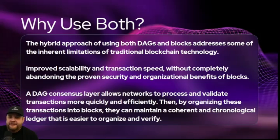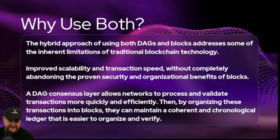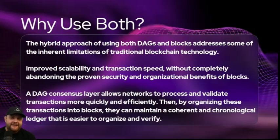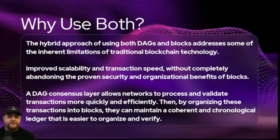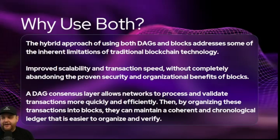Why would X1 use both DAGs and blocks? The hybrid approach addresses some of the inherent limitations of traditional blockchain technologies like Bitcoin and Ethereum using Nakamoto consensus. This DAG hybrid consensus mechanism offers improved scalability and transaction speed without completely abandoning the proven security and organizational benefits of blocks. A DAG consensus layer allows the network to process and validate transactions more quickly, while organizing them into blocks maintains a coherent and chronological ledger.